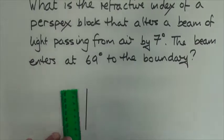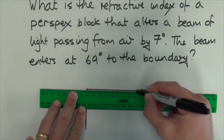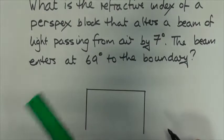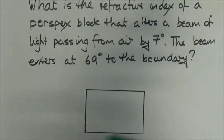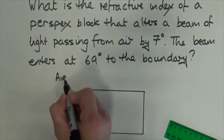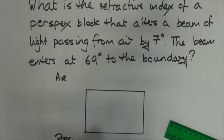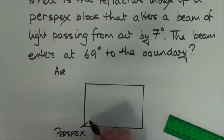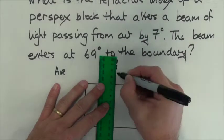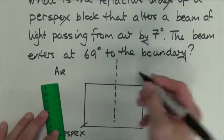Okay, so we're going to draw the perspex block. I'm just going to draw a basic rectangle. There we go, so there's our block. We've got air on the outside and our block is made of perspex, so I'll just label the block there: perspex. Next thing is I'm going to put my normal at 90 degrees to the boundary surface and label it.